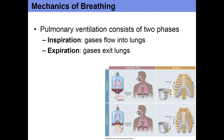During expiration at rest, all we do is relax those muscles. When the intercostals, scapular elevators, etc. relax, gravity pulls the rib cage back down, decreasing chest volume and causing us to breathe out. The diaphragm is also elastic, so it snaps back to its original shape, forcing air out of the lungs. It's primarily a passive process: gravity pulls the rib cage down and the diaphragm snaps back, both pushing air out.